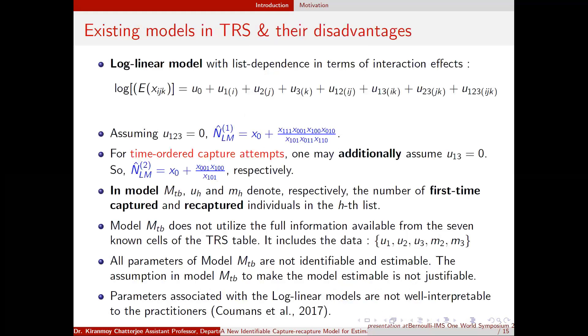There are some existing models which deal with TRS data structure. There is a basic log linear model. We have eight parameters but the data are only seven. So there is estimability problem. That's why a common assumption is to assume the second order interaction U123 equals to zero. If you assume this then the log linear model gives these estimates.